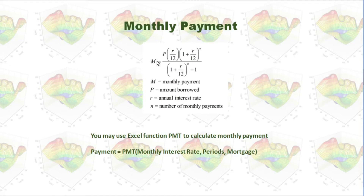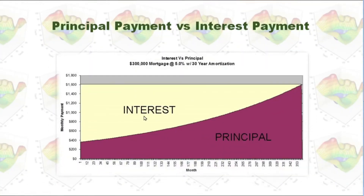With this formula, we can calculate the same payment M for every month. If you use Excel, there is a function PMT that will calculate the monthly payment. You write the formula as PMT, where the first parameter is the monthly interest rate, the second parameter is the number of periods, and the third parameter is the mortgage — that is our beginning balance. Again, you can see that although we have the same payment for every month, the interest portion will be reduced while the principal portion will be increased.